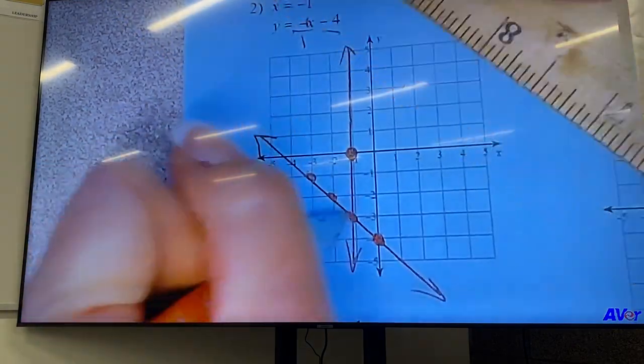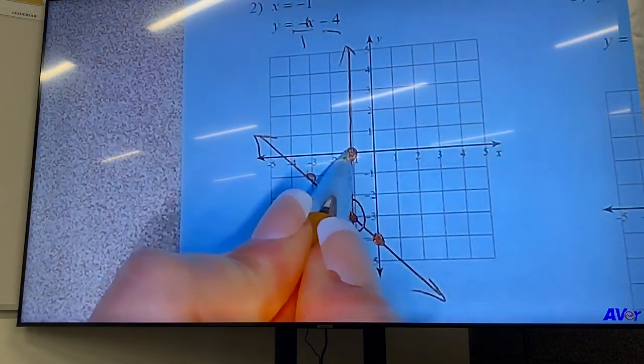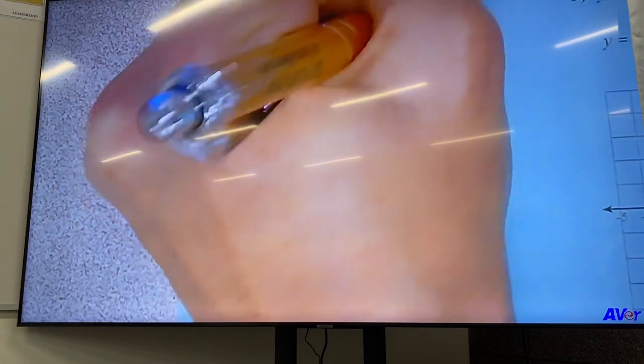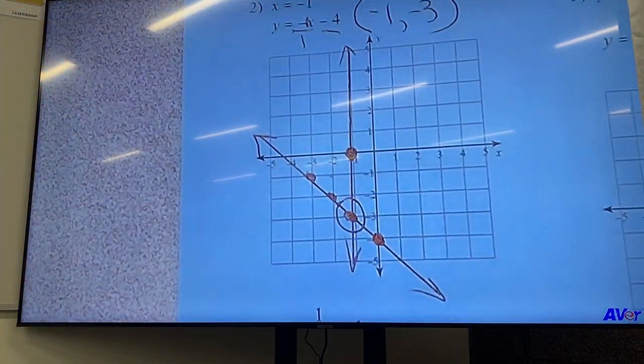And they cross right here. So that dot is negative one, negative three.